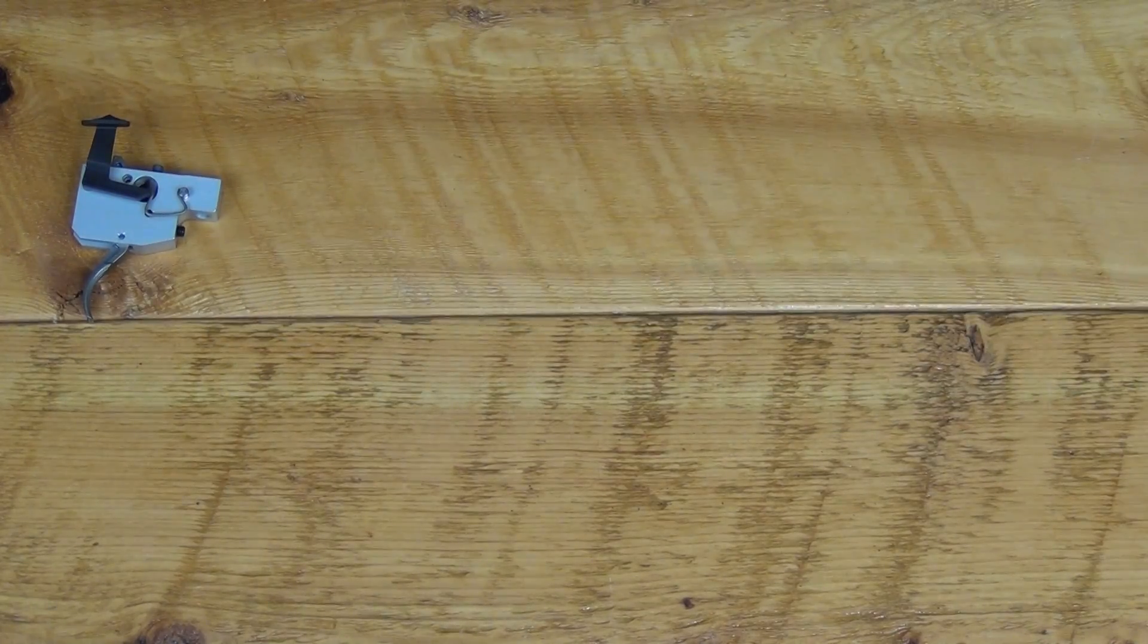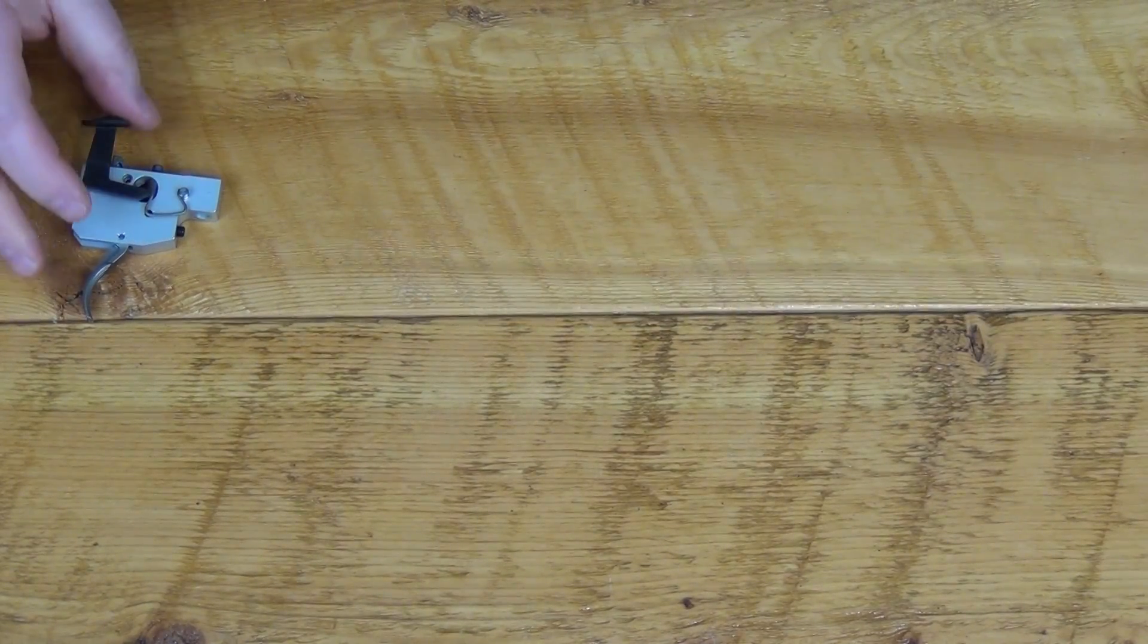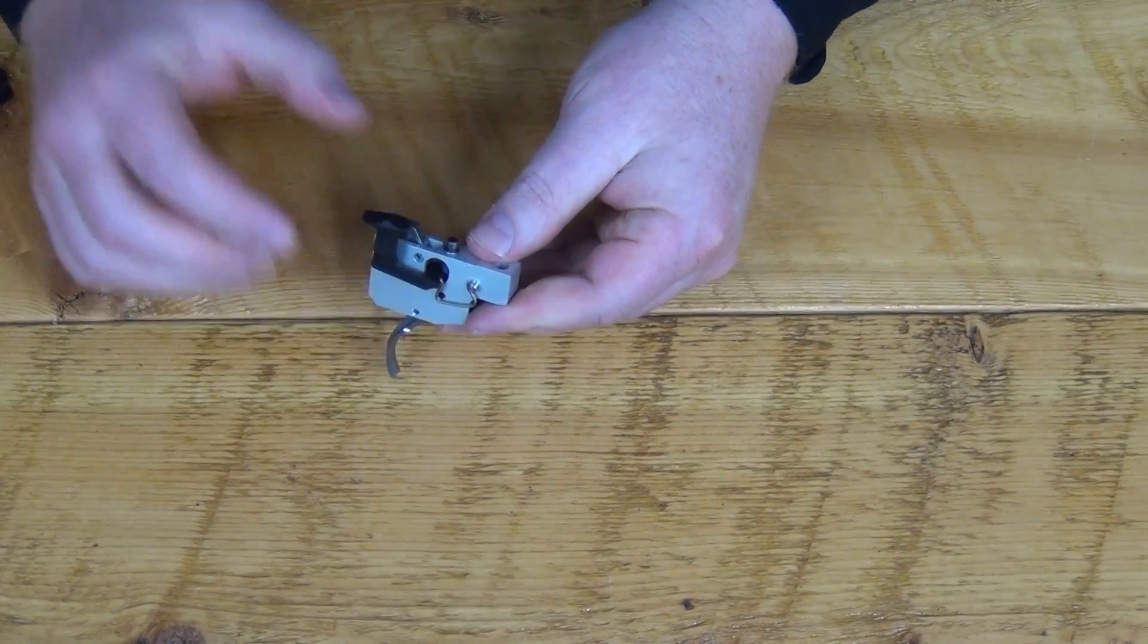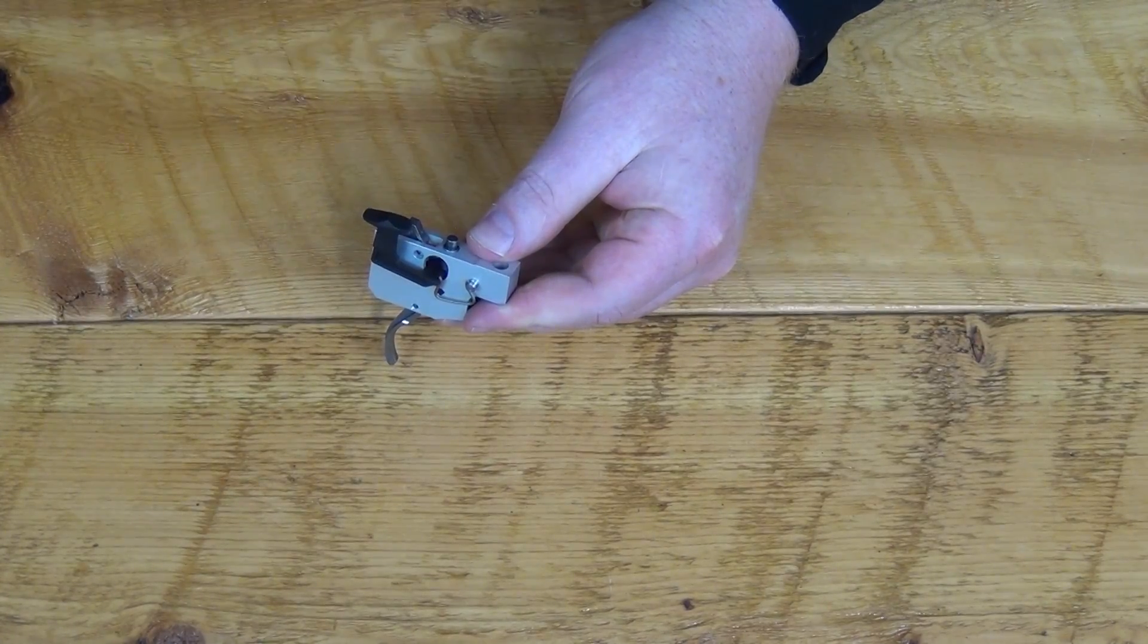And then just lift this out of the action. And we'll set our barreled action to the side. Get in here and take a look at the bits and pieces that make up your trigger pack.